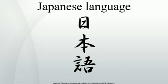While the language has some words typically translated as pronouns, these are not used as frequently as pronouns in some Indo-European languages and function differently. In some cases Japanese relies on special verb forms and auxiliary verbs to indicate the direction of benefit of an action: 'down' to indicate the out-group gives a benefit to the in-group, and 'up' to indicate the in-group gives a benefit to the out-group. Here the in-group includes the speaker and the out-group does not, and their boundary depends on context. Such beneficiary auxiliary verbs serve a function comparable to pronouns and prepositions in Indo-European languages.